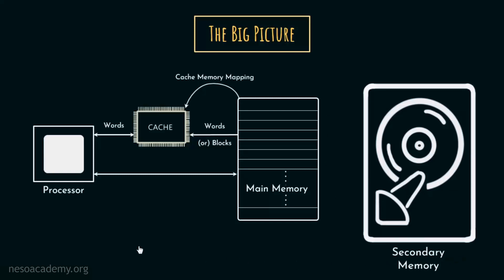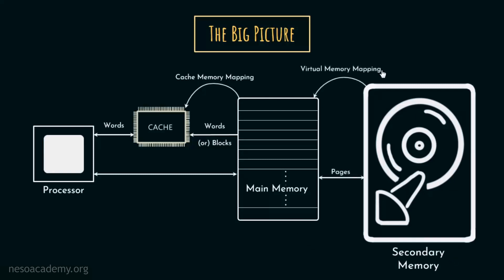The processor remains completely unaware about the existence of secondary memory. To it, the RAM is the only physical memory, and that's why its size is called the physical address space. On the other hand, the secondary memory is managed by the operating system, and using the virtual memory mapping technique, it communicates with the main memory through pages. The concept of virtual memory mapping is the topic of the operating system course, so in this course we will mainly focus on the architectural specifications of the secondary memory storages.